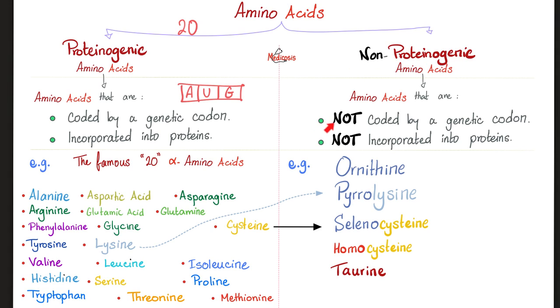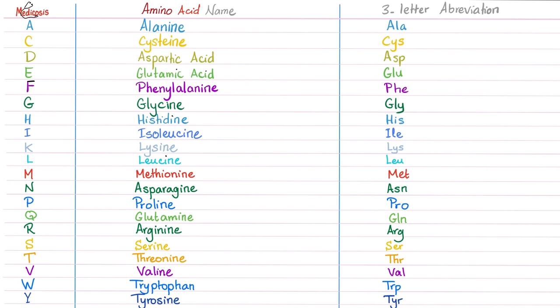How about the non-proteogenic? They are not coded by a codon. They are not incorporated into proteins, but they exist, such as ornithine, if you remember your urea cycle. Pyrolysine. Where did you get pyrolysine from? From lysine. Selenocysteine. Where do you get it from? From cysteine. Seleno means selenium. Pyro because it contains pyroline ring or pyroline side chain. Where did homocysteine come from? From cysteine. Do you remember the coagulation factors? Each one had a name and a number.